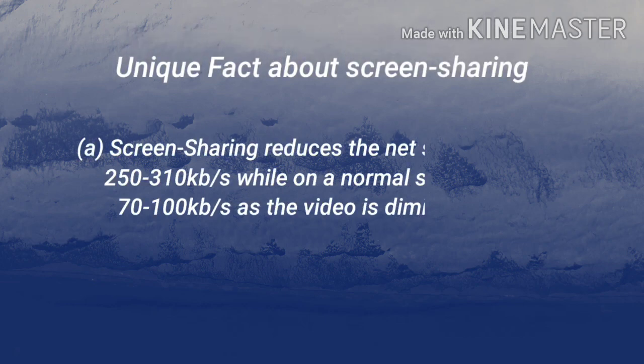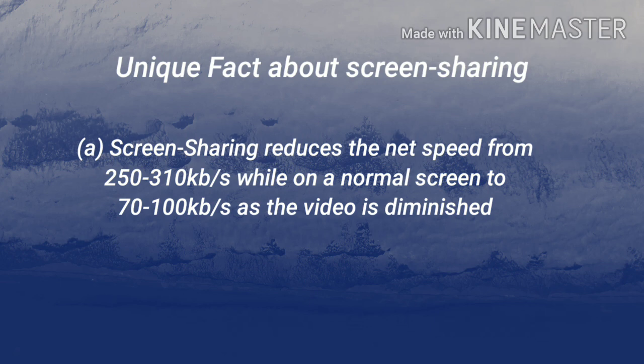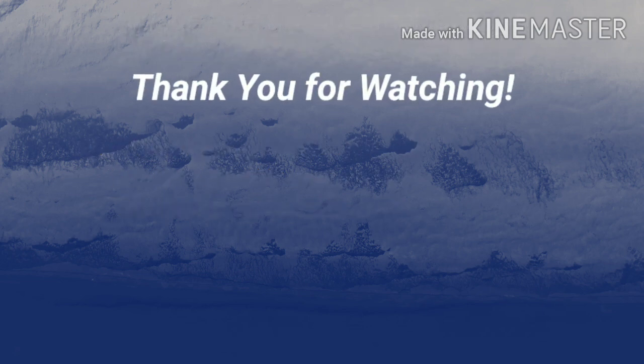Suppose you are viewing Zoom on a normal screen and then your host decides to screen share. What happens is that when the host shares the screen, your internet speed will actually go down — from 250 to 310 kbps to around 70 to 100 kbps. This is the unique fact about screen sharing: it actually takes fewer resources than the normal view.